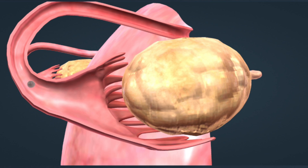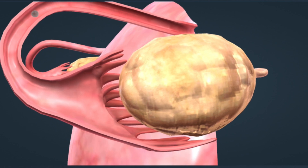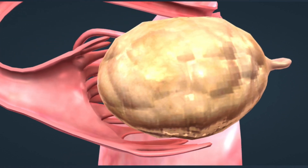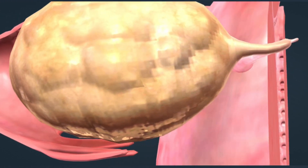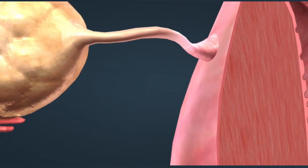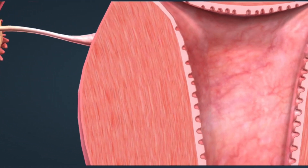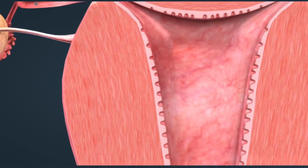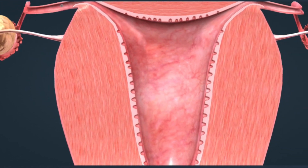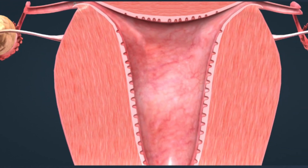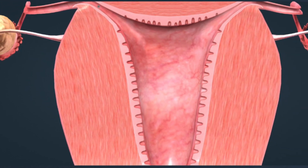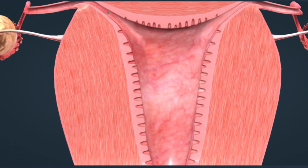During ovulation, the mature egg is released from the ovary. It enters the fallopian tube and travels towards the uterus. Then, the embryo attaches to the endometrium, which is thick after ovulation, in preparation for the embryo.